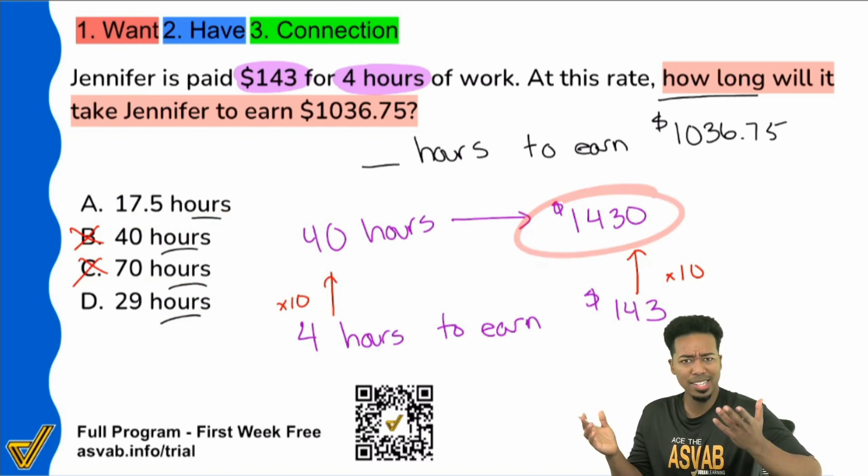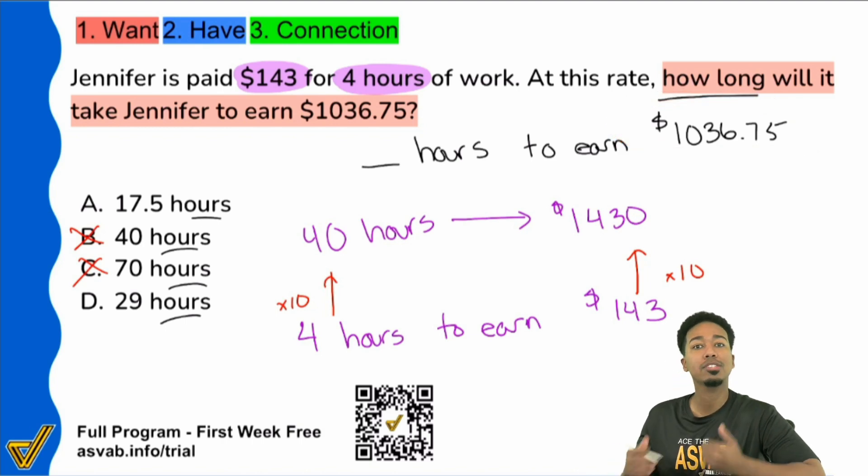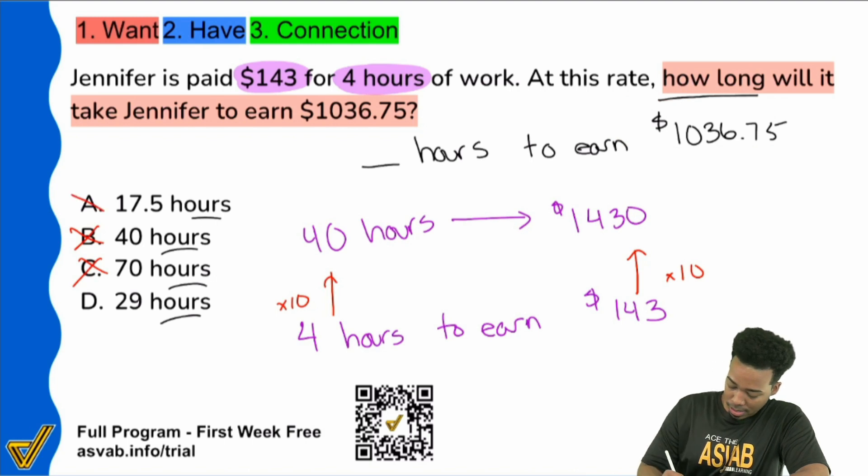Well, that's pretty easy to see. We can estimate that's about 700. That's about 700. That's way more than $700. So that means it's way more than 20 hours, not less. I can eliminate A and by default, the answer is D.